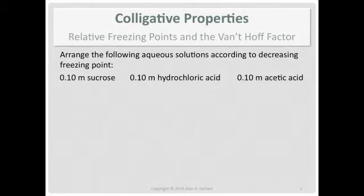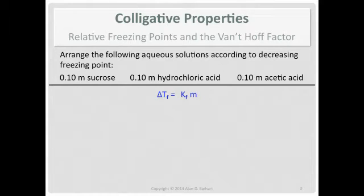We have three aqueous solutions: one of sucrose, one of hydrochloric acid, and one of acetic acid. We're going to arrange them according to decreasing freezing point — in other words, high to low. As soon as I see freezing point, I think colligative properties and the formula that allows us to calculate the change in freezing point, because maybe there's some information in there to help us figure this out.